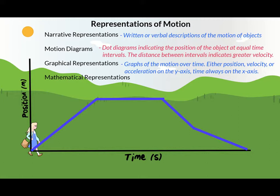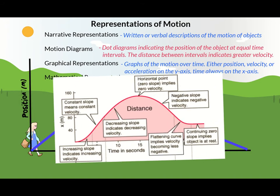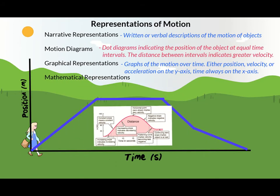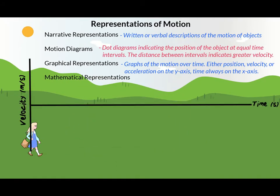On a position-time graph, the slope of the line will give you the speed, and the sign of that slope — positive or negative — will give you the direction. Therefore, the slope of a PT graph results in the velocity of the object, and a constant slope indicates a constant velocity.